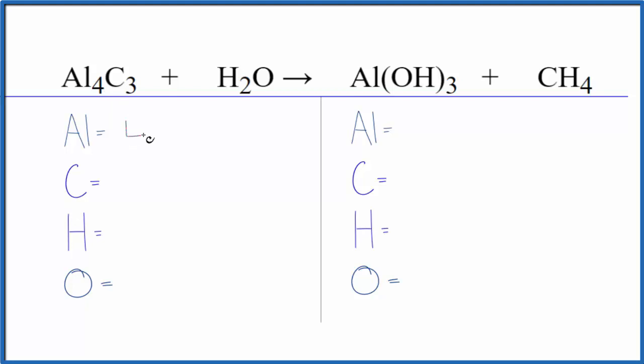We have four aluminum atoms, three carbon, two hydrogen, and then one oxygen. On the product side, we have one aluminum, one carbon, and then we have hydrogens. We have three times the one here, so we have three, plus we have the four in the methane.